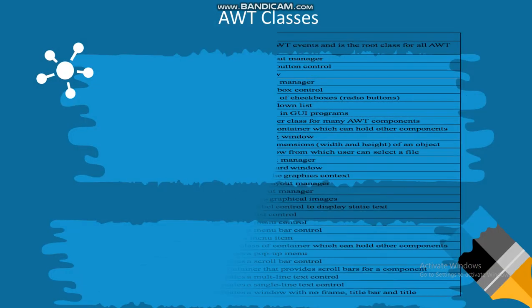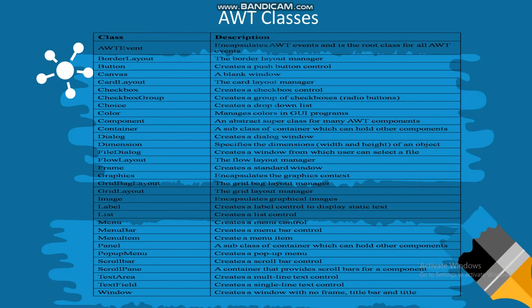The AWT package contains these classes: for example, AWT event class which encapsulates AWT events, border layout which defines layout regions of north, south, east, west, and center.